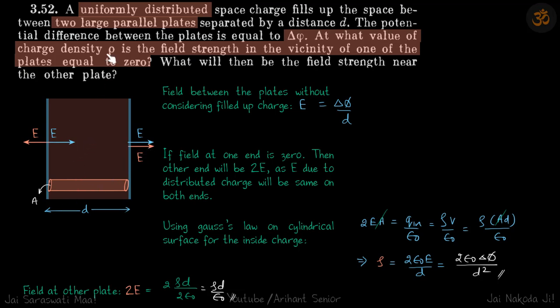So what should be the magnitude of that rho? We are going to consider a Gaussian surface, a small cylinder of cross sectional area A. So let me just read this once. Field between the plates without considering filled up charge is delta phi by D.